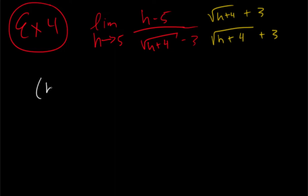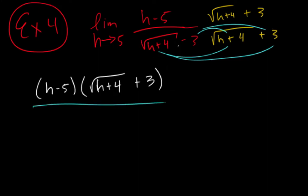Okay, on the top, we're just going to leave it kind of in factoring form. On the bottom, we're going to do distribution. So if we do this times this, we get h plus four. This times this is going to be three square root of h plus four. If we do this times this, we get negative three square root of h plus four. If we do this times this, we get negative nine.